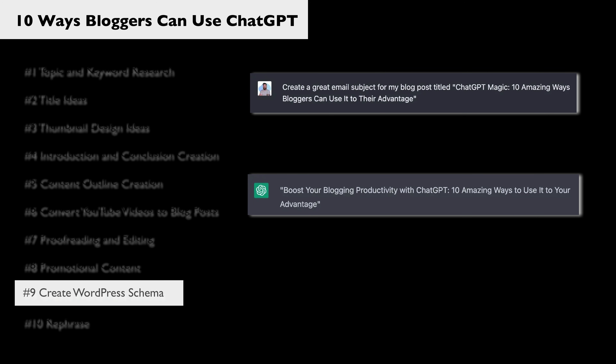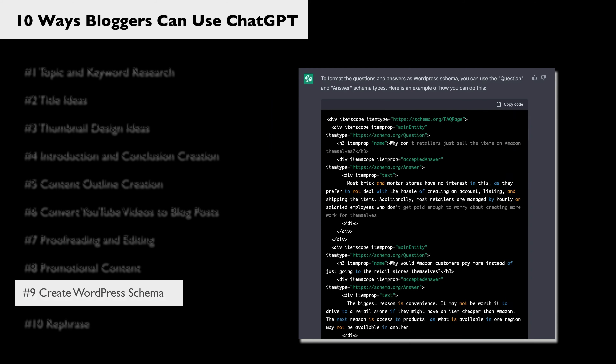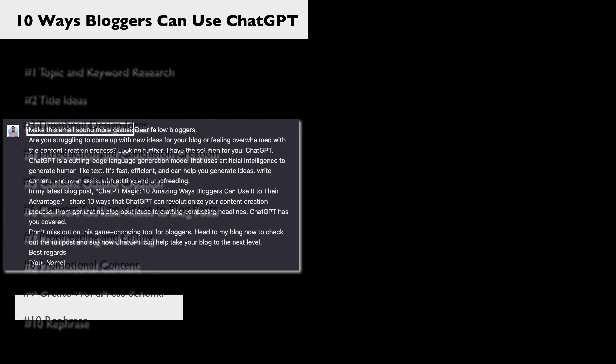Next, we can use ChatGPT to create WordPress schema. If you have questions and answers, you can format those in a way that you can inject them into your blog posts so that they show up in search results properly. I still prefer using a plugin for this, but if you manually create schema, this is something that could save you a lot of time.